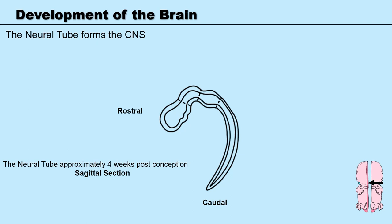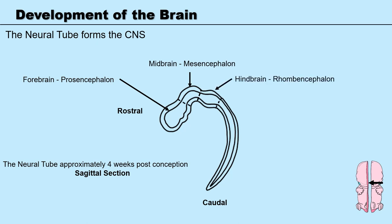At four weeks post-conception we have three parts of the primitive brain in place: the forebrain, known as the prosencephalon; the midbrain, known as the mesencephalon; and the hindbrain, known as the rhombencephalon. We also have the primitive spinal cord and a canal that runs along the whole length that will go on to form the ventricular system and the circulation of cerebrospinal fluid.